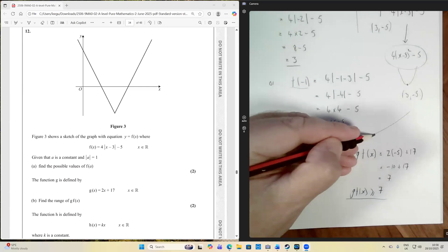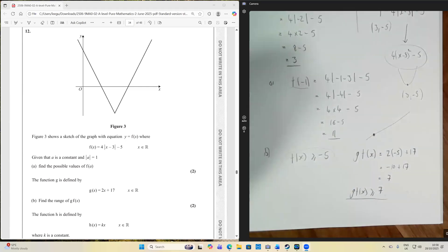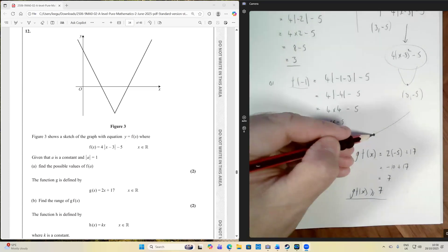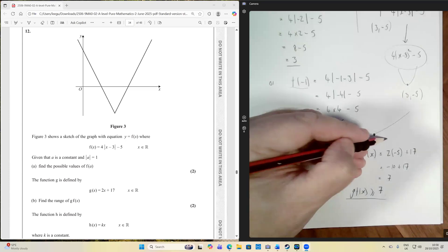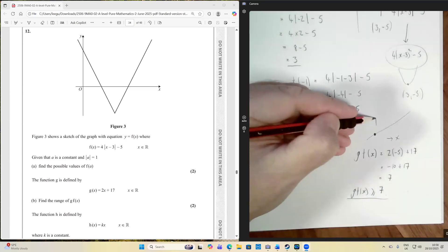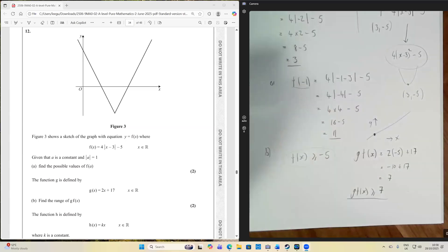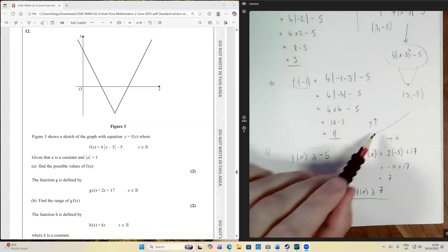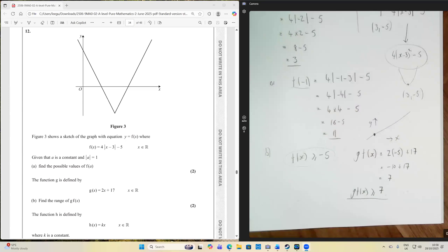And so we're saying that the smallest value that can go into it from f of x is minus 5. And when we do that, that corresponds to a g of x value of 7. And as x increases, our g of x is only going to increase as well. So therefore, we can say that this minimum value of minus 5 when it goes into g of x is going to give us the minimum value as well of g of f of x. Therefore, the range of g of f of x is greater than or equal to 7.